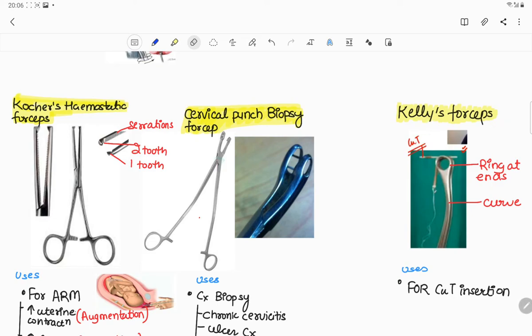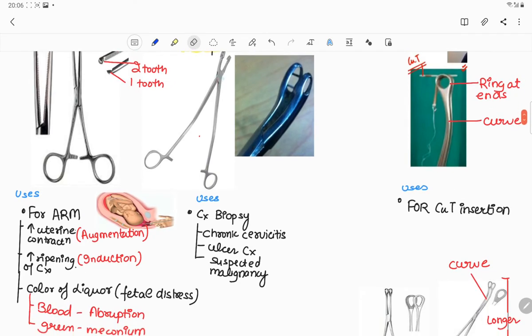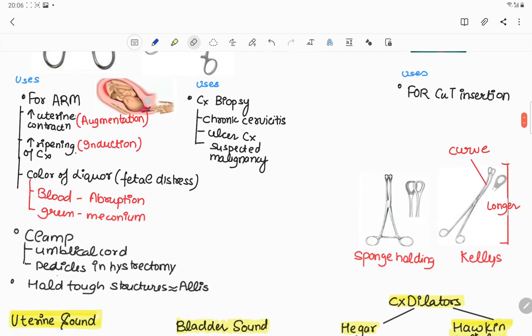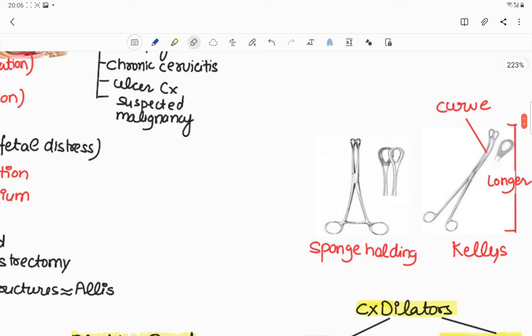Eleventh is Kelly's forceps. It also contains rings at the ends and is used for copper T insertion. The difference between sponge holding and Kelly's forceps are Kelly's forceps is longer and has a curve at the end.